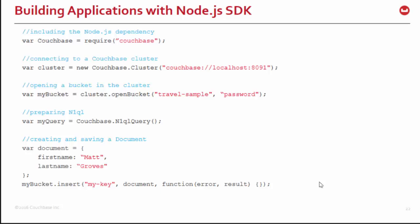Here's how you would generate a N1QL query. Here's how you would generate and save a document — I'm creating a JSON object with first name and last name fields, and calling bucket.insert with the key and the document. With Node, you have this callback pattern for asynchronous coding: if there's an error it returns an error, otherwise it returns a successful result.